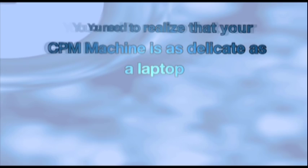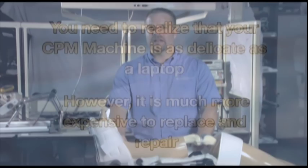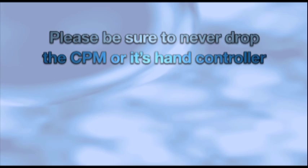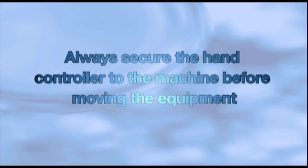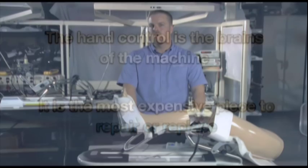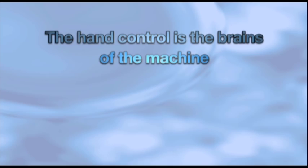Okay, so you need to realize that your CPM machine is as delicate as your laptop computer. It is, however, much more expensive to replace and or repair. It is crucial that you take good care of your CPM to keep it out of the repair shop and running for years to come. A properly cared for CPM machine can often last well beyond five years. Please be sure to never drop the CPM or its hand controller. Doing so may cause permanent failure. Always secure the expensive hand controller to the machine before moving the equipment. The hand controller is the brains of the machine and is the most expensive piece to repair or replace.